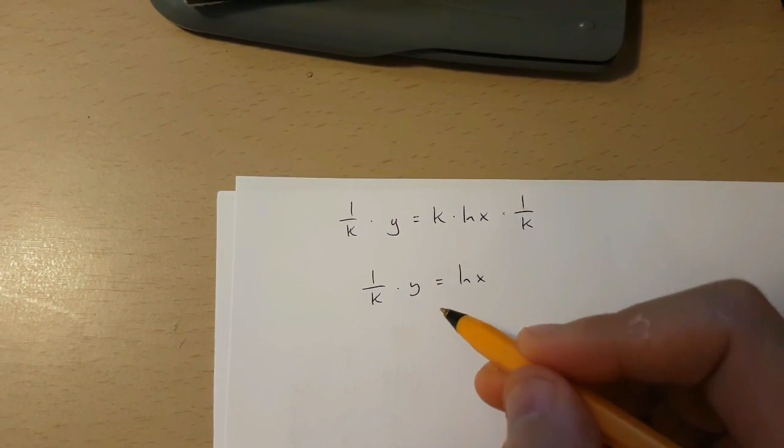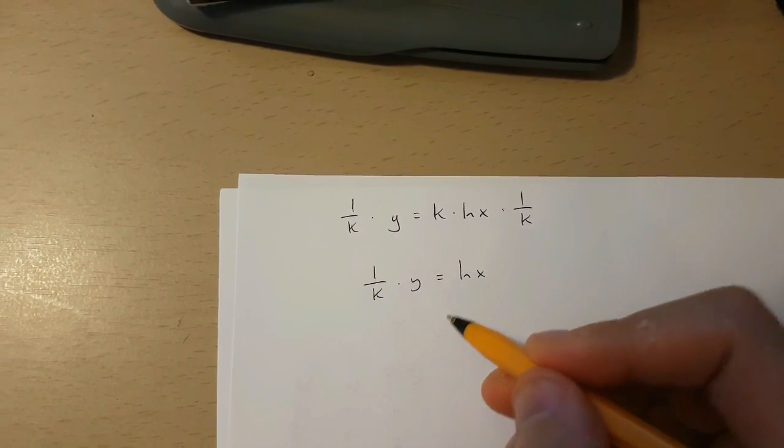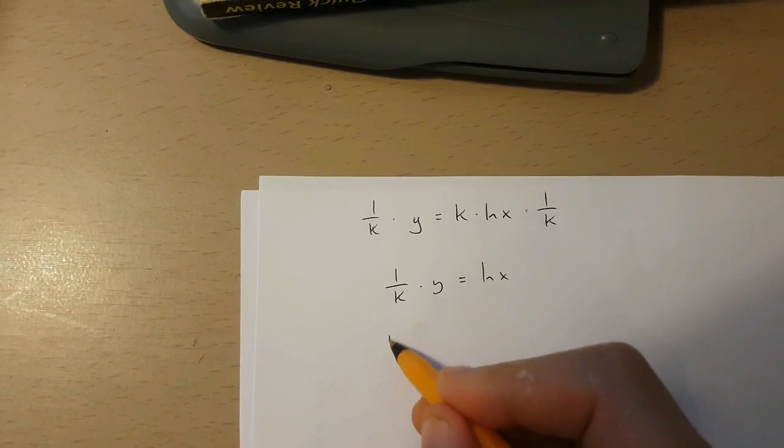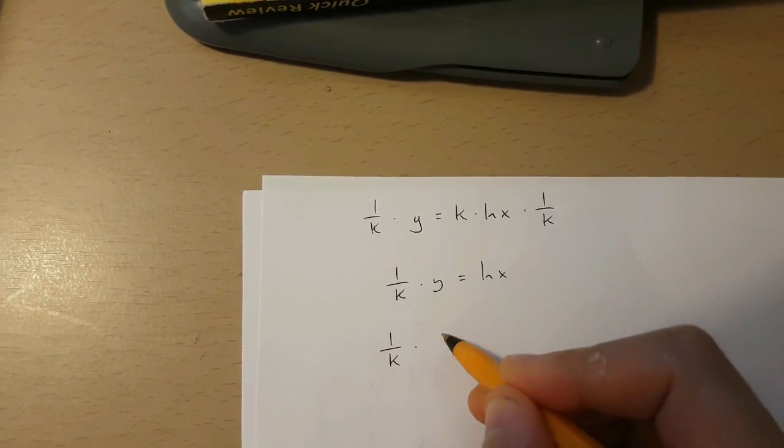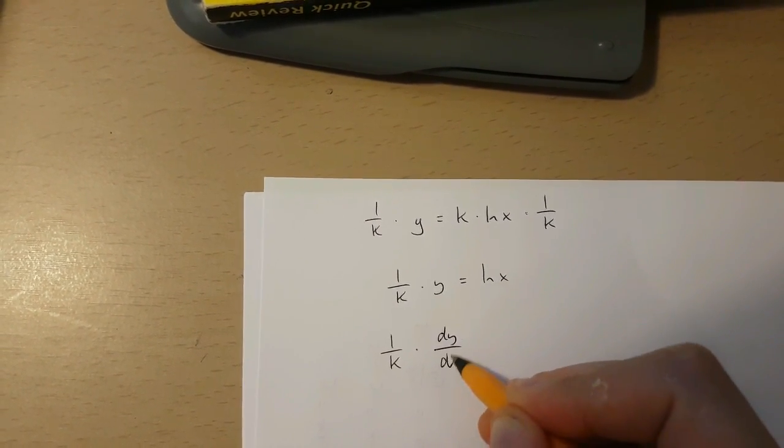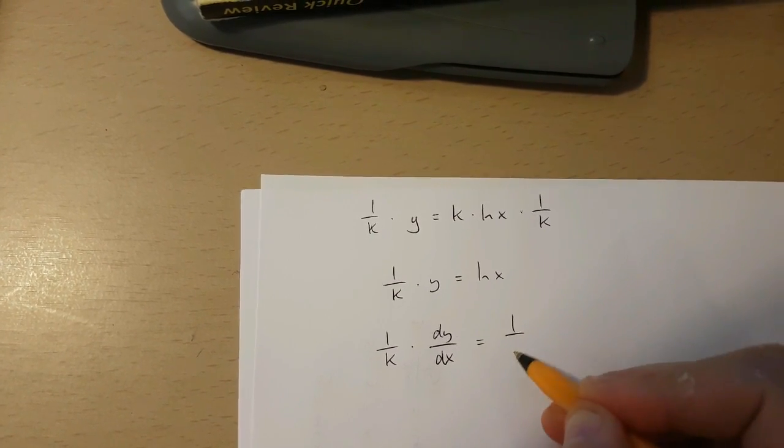Now if I use implicit differentiation over here, I'm going to get 1 over k times dy over dx is 1 over x.